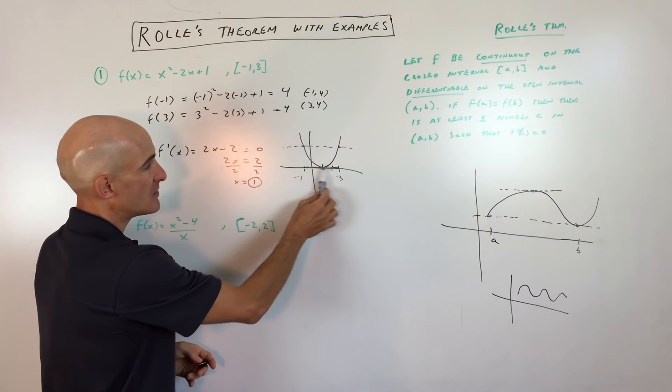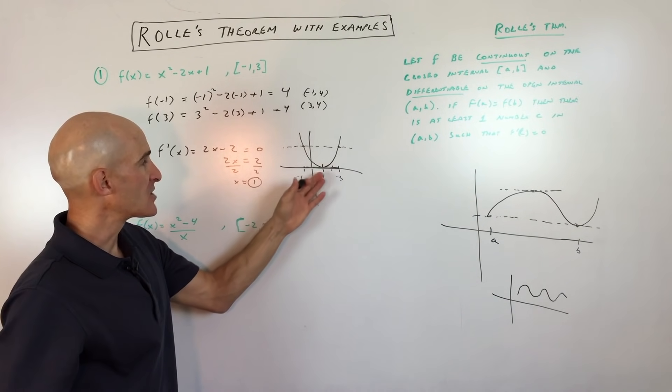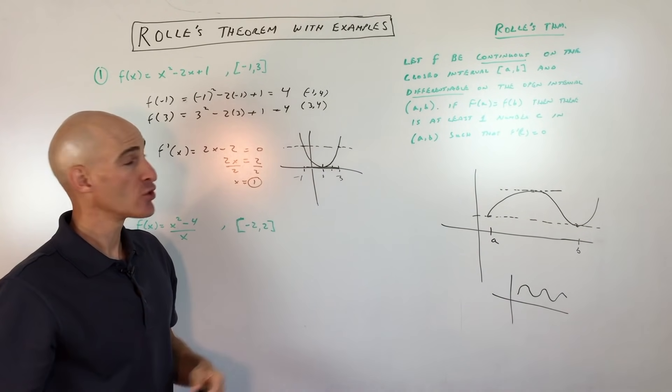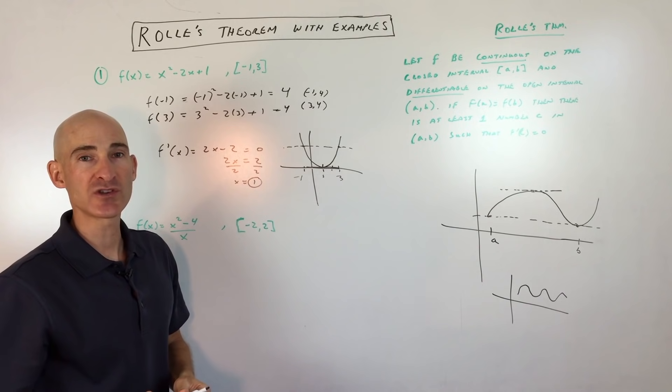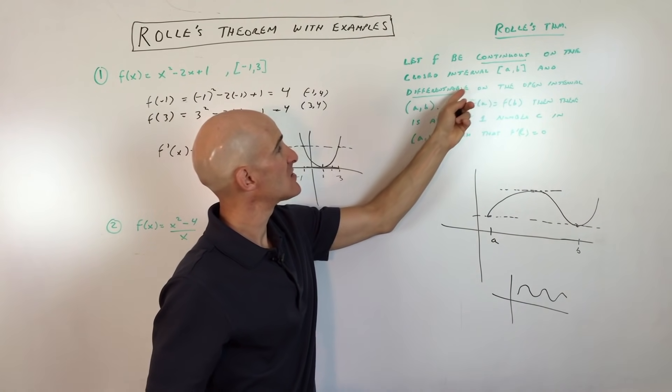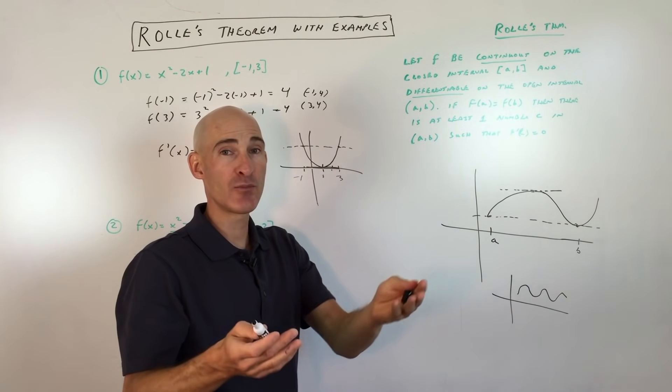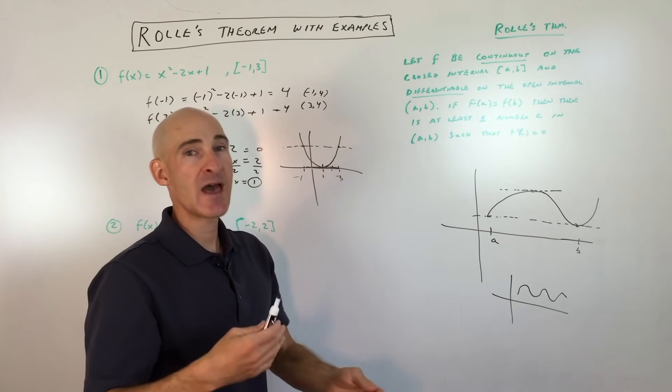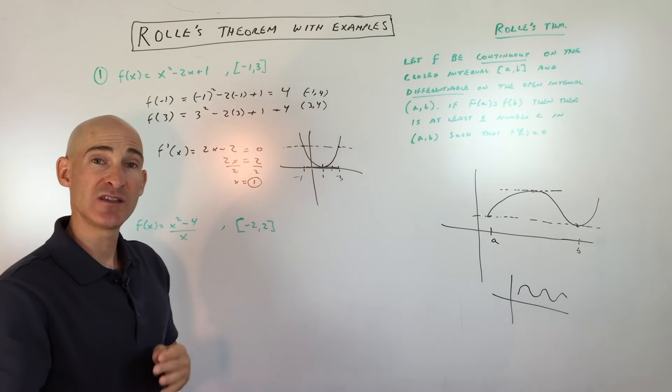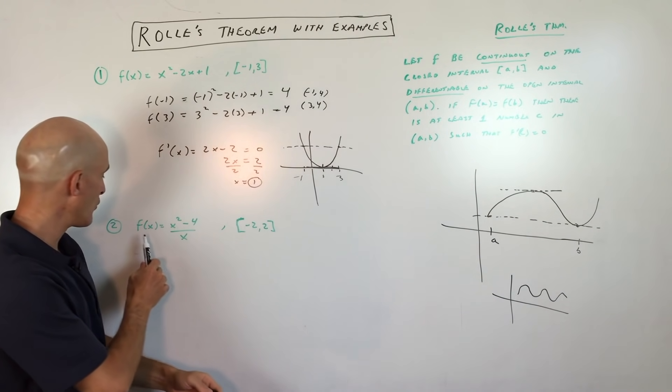And in between negative 1 and 3, there's a point. In this case, it's at positive 1, where the tangent line is horizontal at 0. Now, it happens to be right in between, right in the middle at the midpoint. That's not always the case. I just did this as a simple example just so I can show you the graph and just show you how it works. But again, you want to make sure that it satisfies all these conditions. Continuous, differentiable, and that the y values at both of the endpoints are the same. And then that applies, Rolle's theorem applies, meaning that in between those two endpoints, the tangent line has to be horizontal.